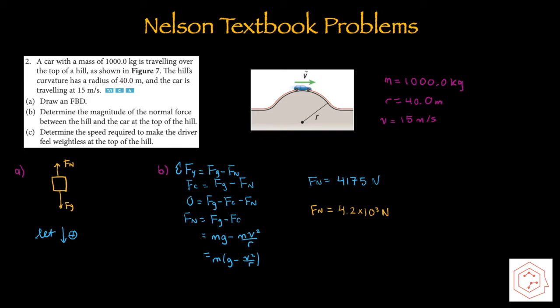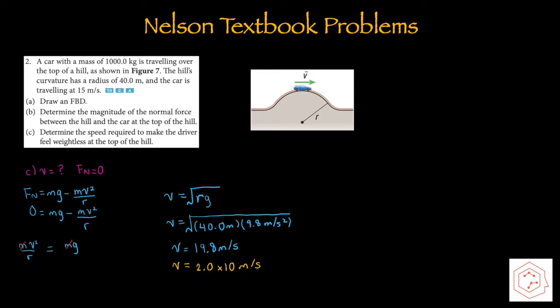For part C, determine the speed required to make the driver feel weightless at the top of the hill. Apparent weight equals normal force, so in order for the driver to feel weightless, the normal force must equal zero. Using the equation solved in the previous part and setting normal force equal to zero, we can isolate for speed. The speed required is 19.8 m/s, which is 2.0 × 10¹ m/s using two significant figures.